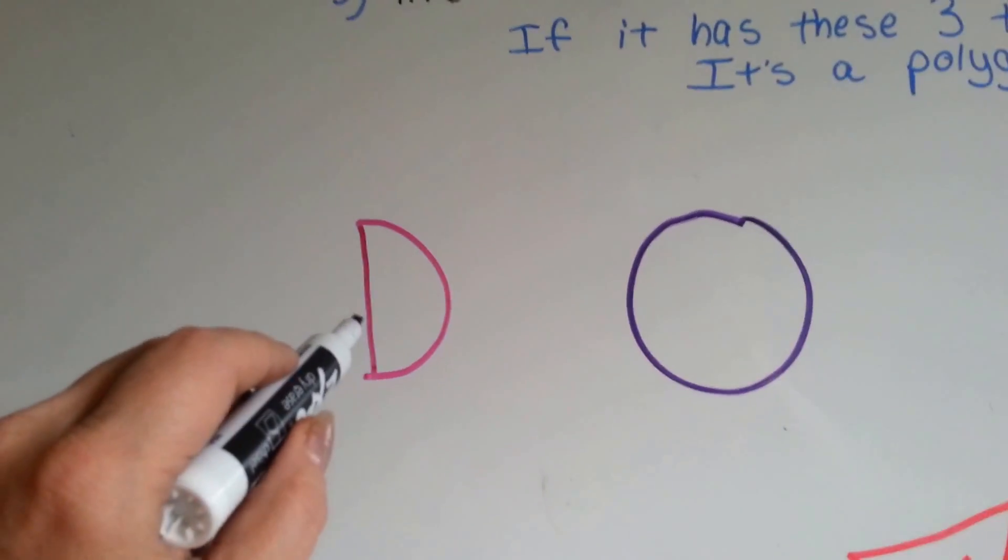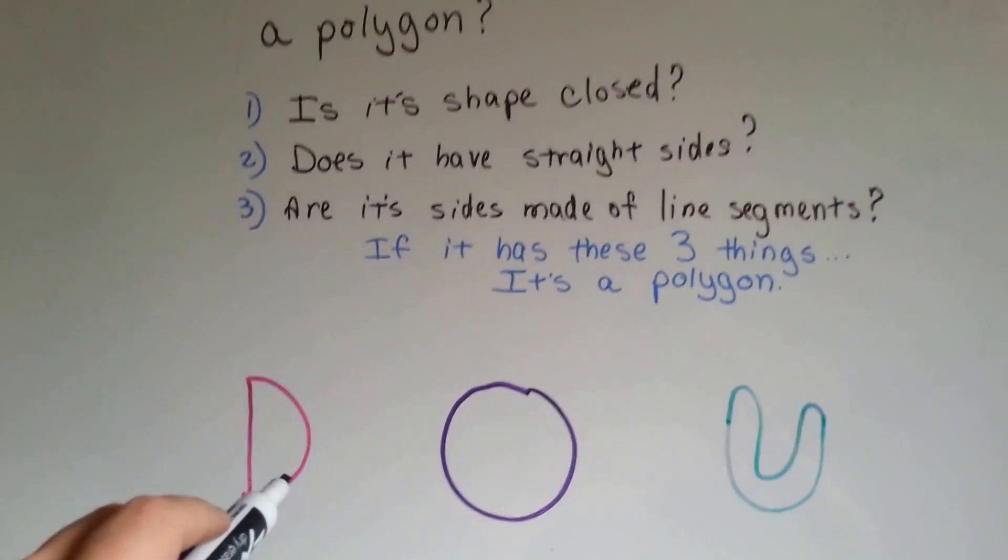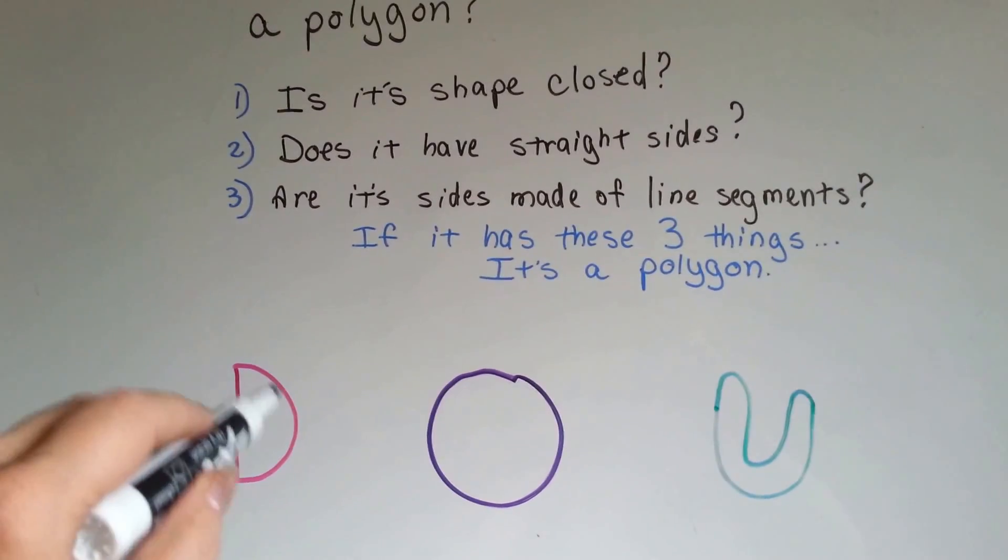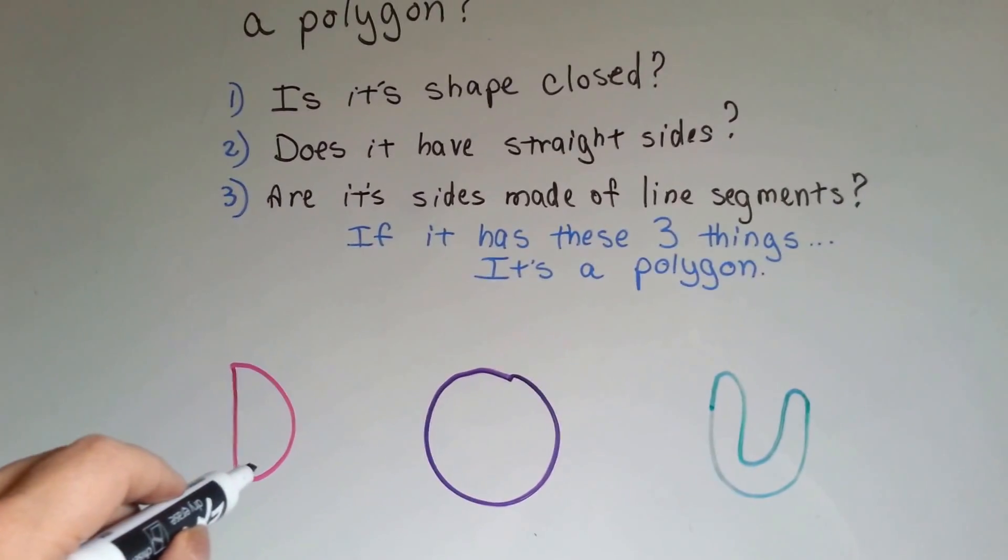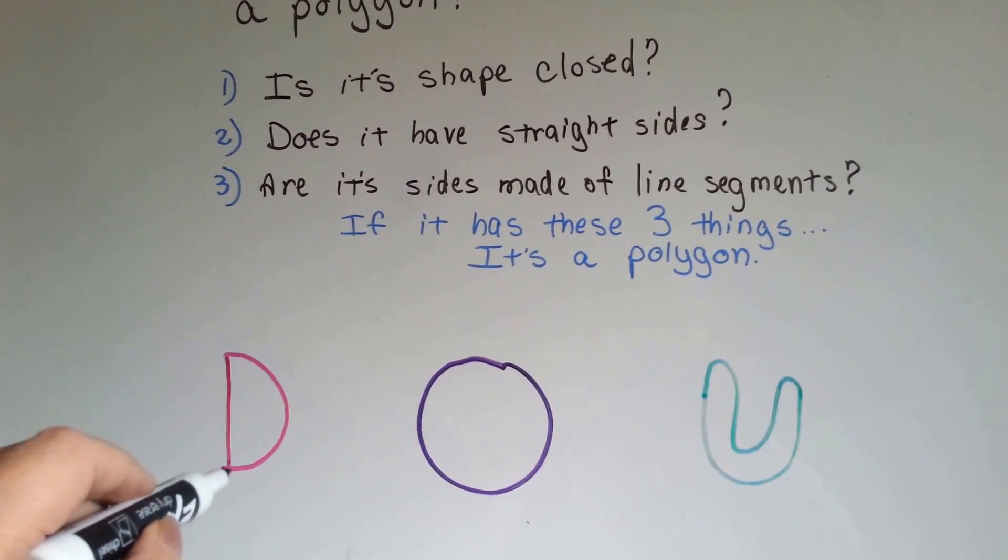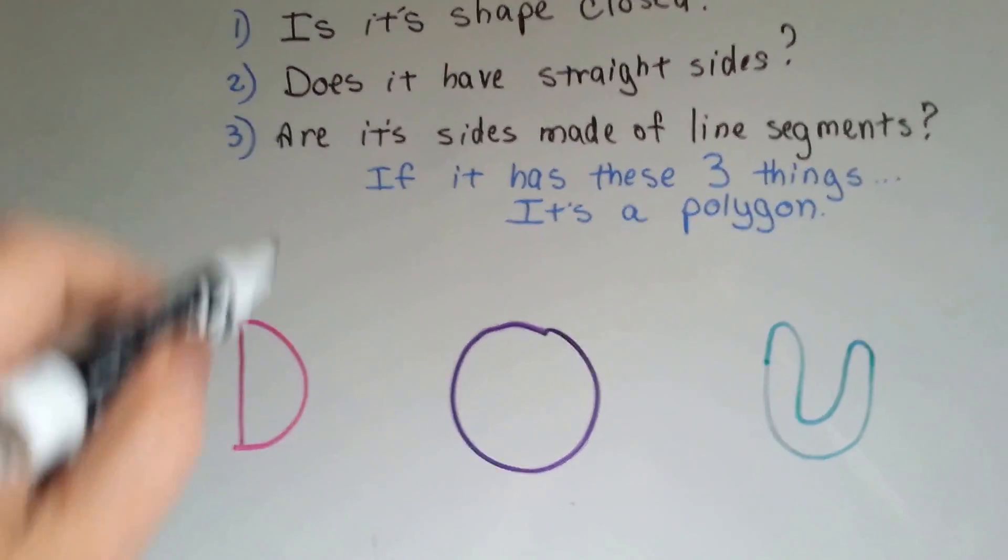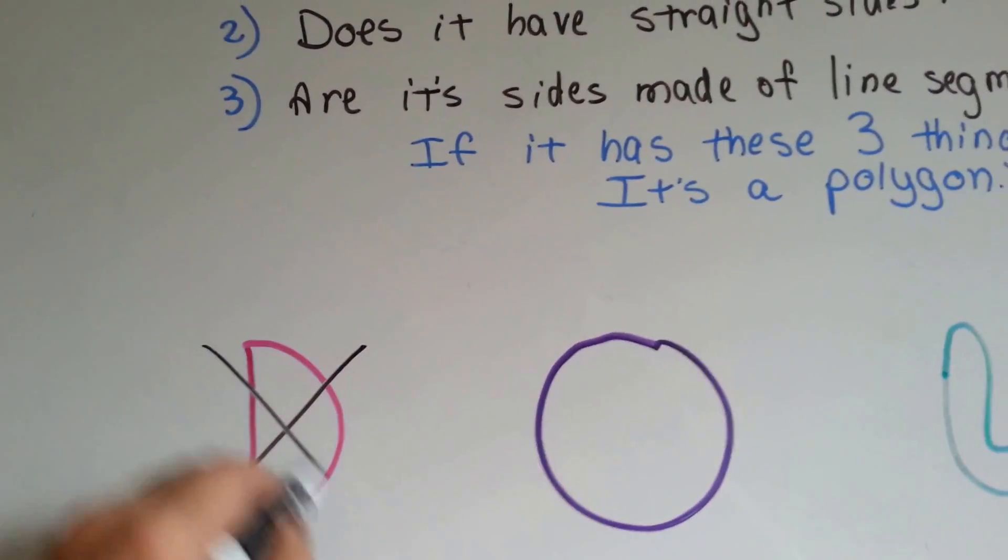How about this half circle? Is that a polygon? Is its shape closed? Yes, it is closed. Does it have straight sides? Well, it's got one straight side, but this side's curved. So it failed number two. So that is not a polygon.